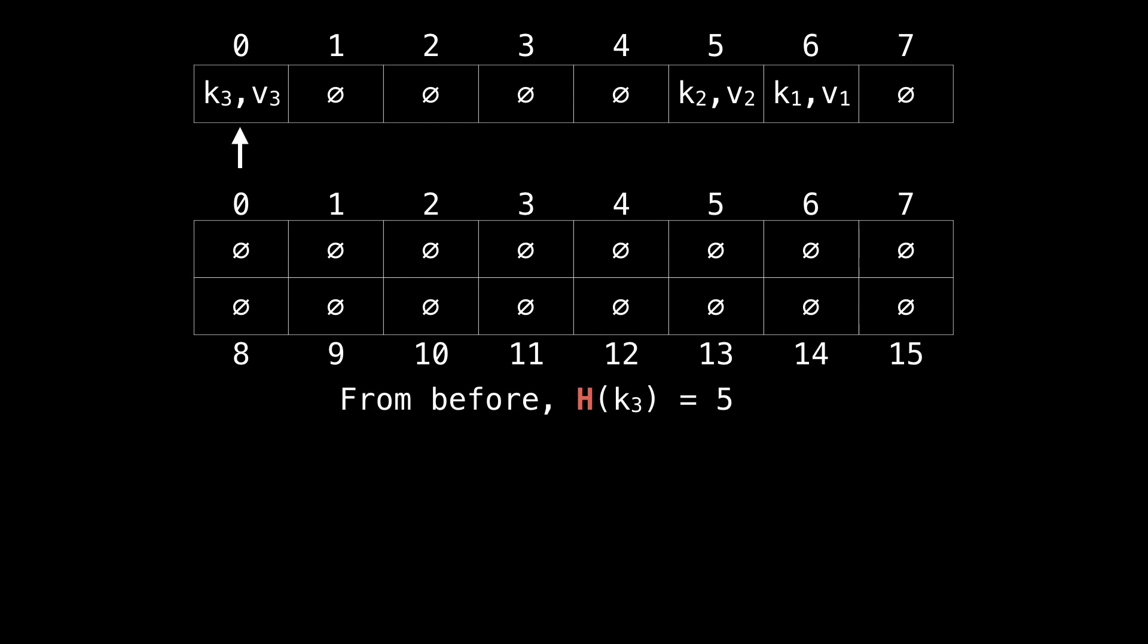We need to place the entries in the old hash table into the new hash table. From before, we know that k3 hashed to 5, so we're going to put it at index 5, because we don't have a collision there. No element at position 1, 2, 3, or 4. Then we find k2 at position 5.